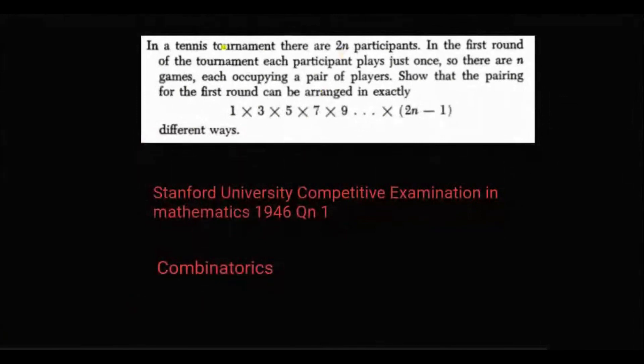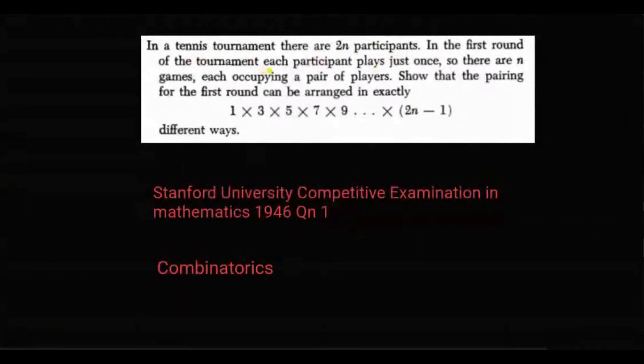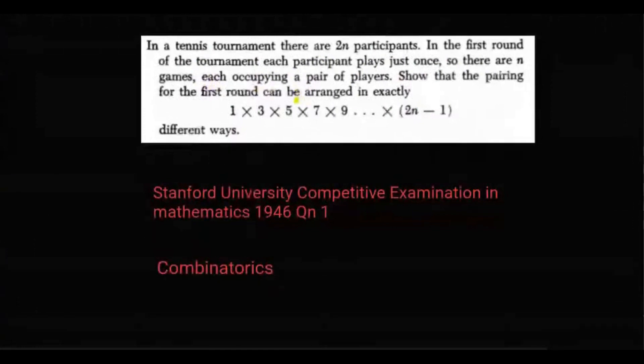Here it is given that in a tennis tournament there are 2n participants. In the first round of the tournament each participant plays just once so there are n games, each occupying a pair of players. We need to show that the pairing for the first round can be arranged in exactly this many different ways.